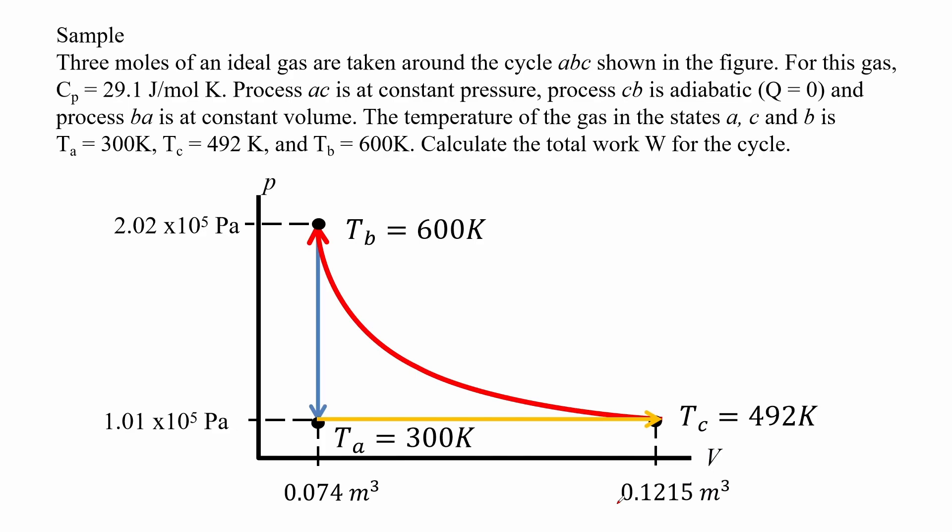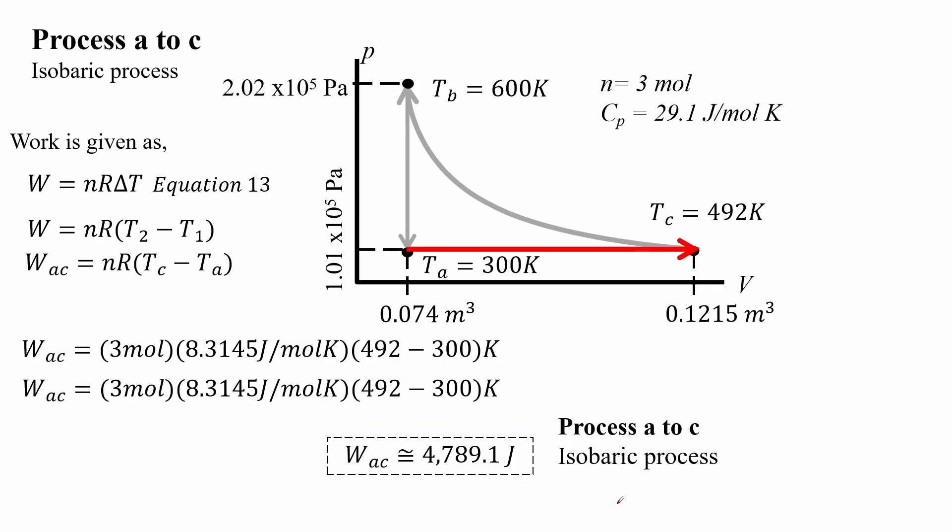Here we draw the pressure volume diagram in the figure for the system. The first process is an isobaric process for A to C. Recall work is given by equation 13. So work for A to C is equal to the number of moles times the gas constant times the change in temperature. Substituting the values, we see that the work A to C is about 4789 Joule for process A to C, which is an isobaric process.